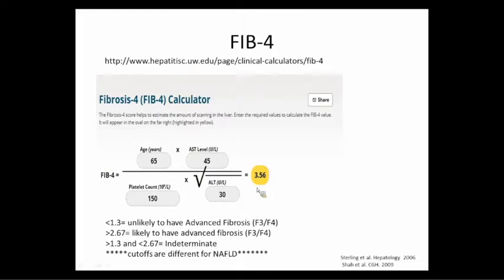This patient comes out with a FIB-4 score of 3.56, which is greater than 2.67, indicating very likely advanced fibrosis in the liver.